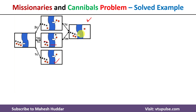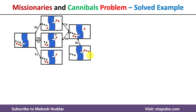Considering this state, if we bring two missionaries to the right there will be one missionary and two cannibals remaining on the left — not possible. Bringing one missionary leads to a similar invalid state. Bringing one missionary and one cannibal also results in one missionary and two cannibals — not possible. So the only valid move is to bring two cannibals to the right hand side. From that resulting state, we then bring one cannibal back to the left hand side, since bringing two back would just revert to the previous state.